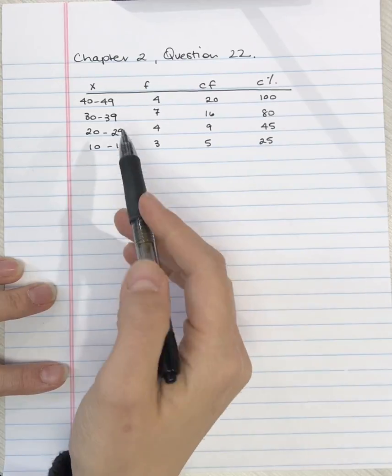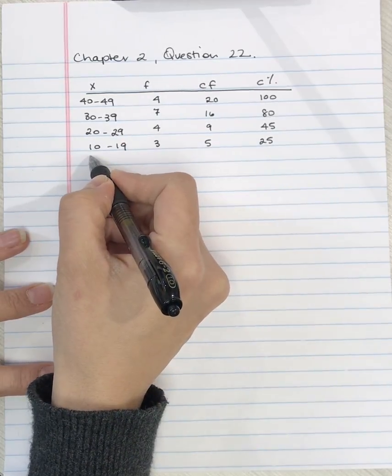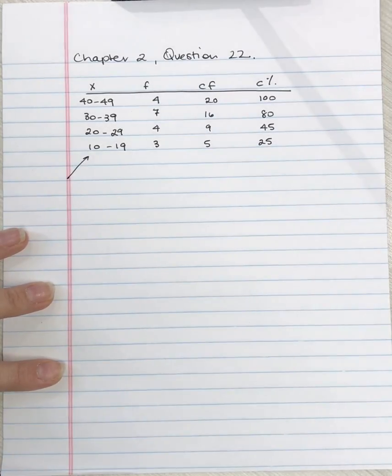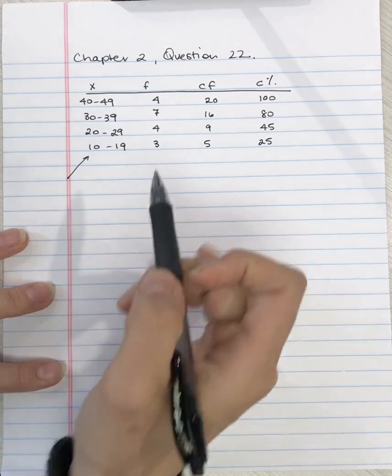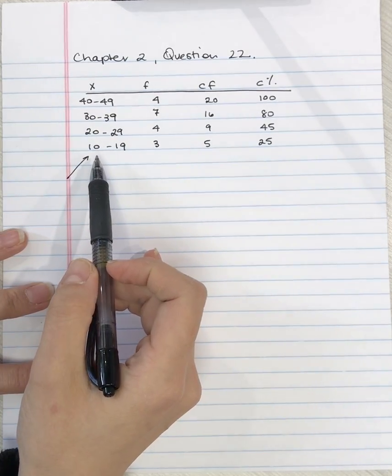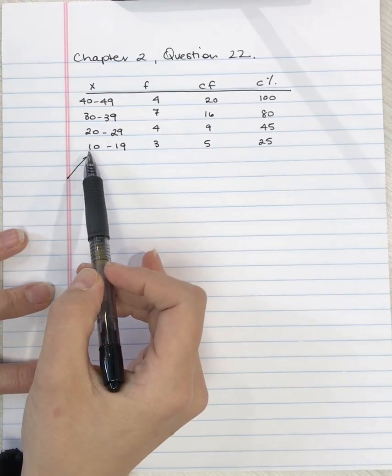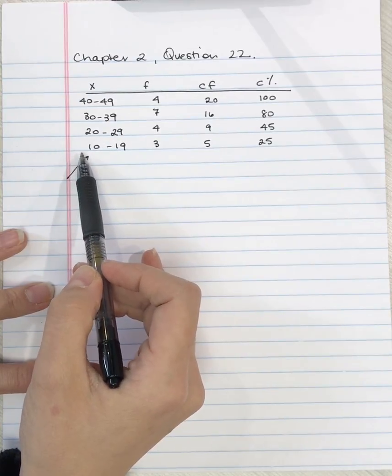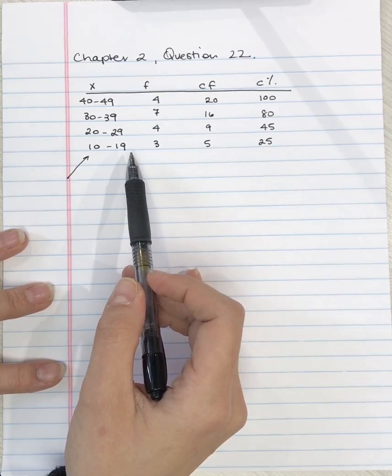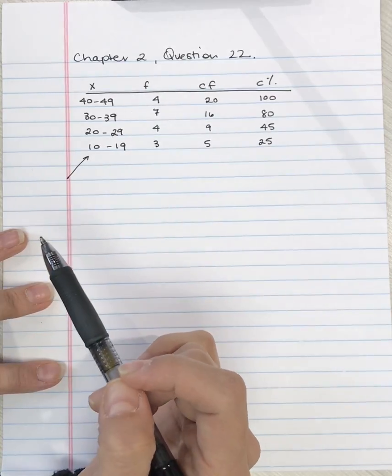Remember, when we have a grouped frequency distribution, we lose some data. So these three scores are somewhere between the lower real limit of 9.5 and the upper real limit of 19.5, but we don't know what that exact value is.